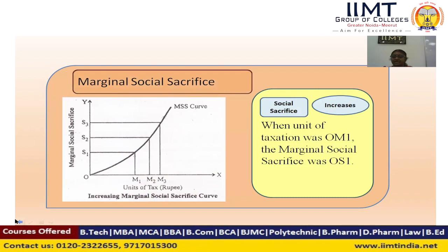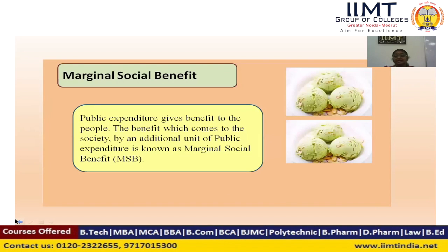The MSS curve shows an increasing tendency — social sacrifice increases with each additional unit of taxation. That is what we understood from Professor Dalton's expression through the marginal social sacrifice curve. Now coming to the second term which Professor Dalton expressed: marginal social benefit. In marginal social benefit, what is the benefit? That I should explain.